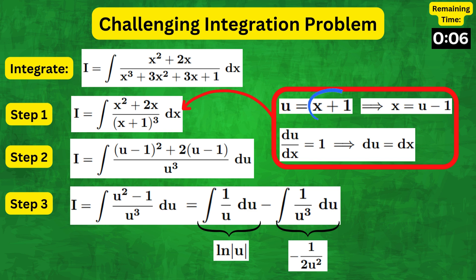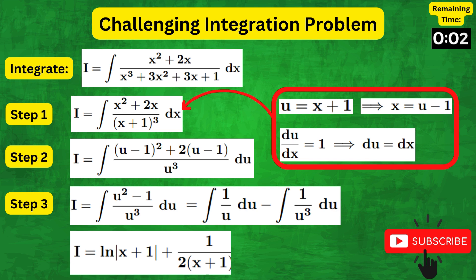Finally, replacing u with x plus 1, we get the answer: natural log of modulus of x plus 1 plus 1 over 2x plus 1 squared plus c. A like really helps. Thank you.